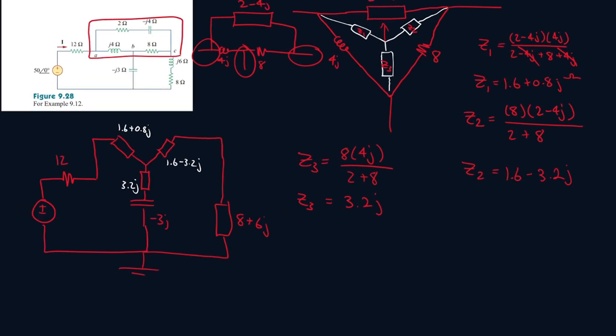And this capacitor was minus 3j, and then this was 12 ohms. These two we can just quickly add them up, so 1.6 plus 8 gives me 9.6 plus 6 minus 3.2, that's plus 2.8j. So that's what you get after combining these two together. I'll just quickly replace that with this value.